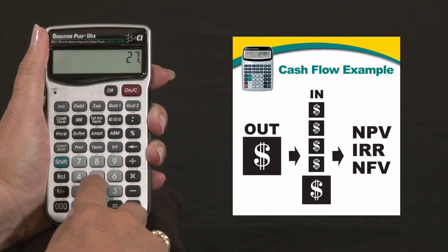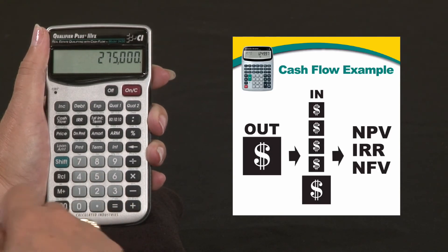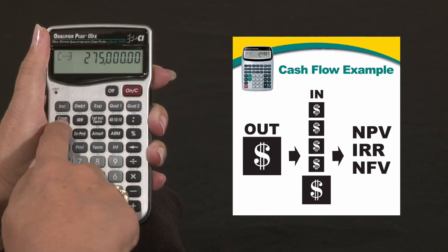And then $275,000 is what he would like. So that's your third.